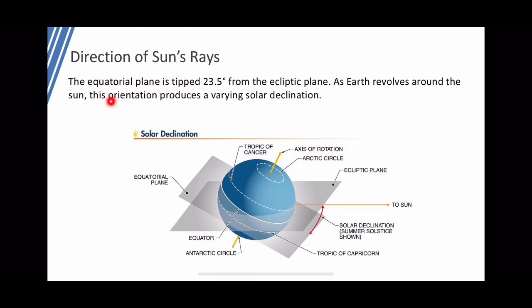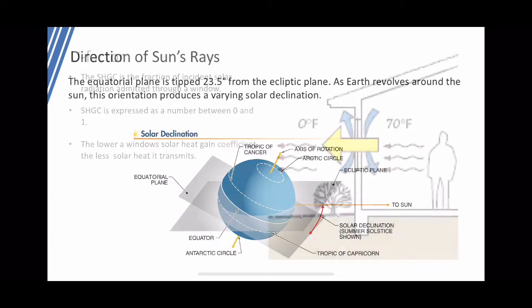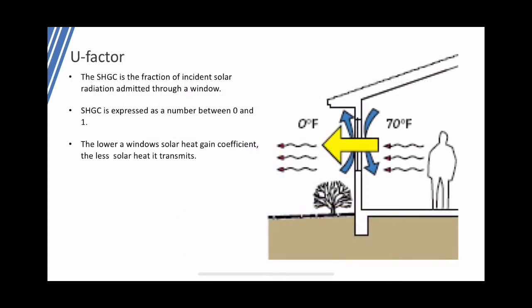The equatorial plane is tilted 23.5 degrees from the ecliptic plane. As the earth revolves around the sun over 365 days, this orientation produces a varying solar declination — which is why some locations experience winter, summer, high noon, or very little noon sunlight at different times of the year.